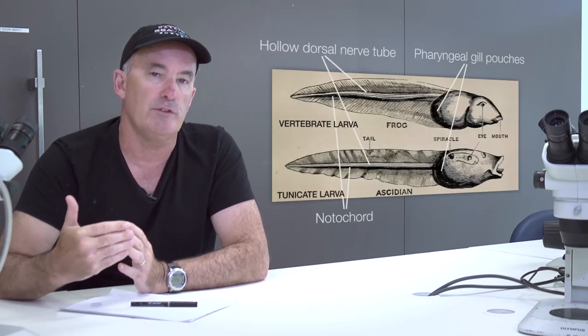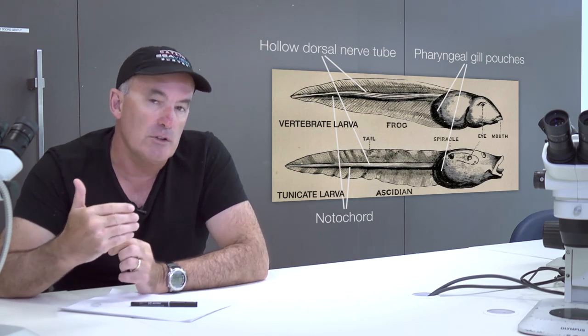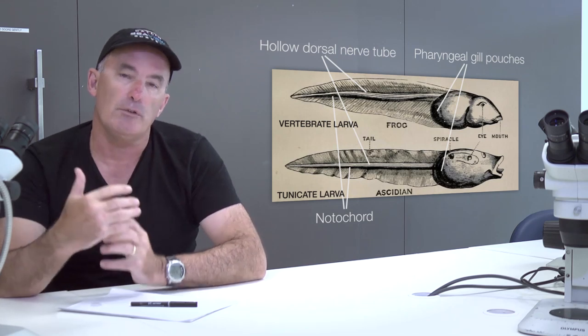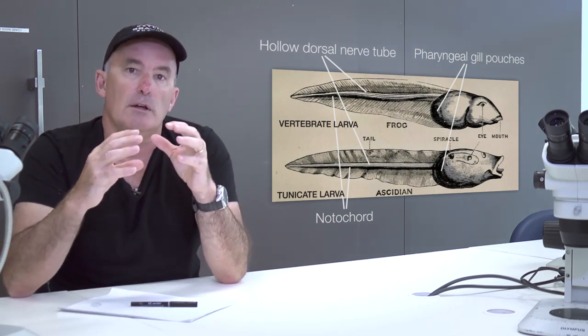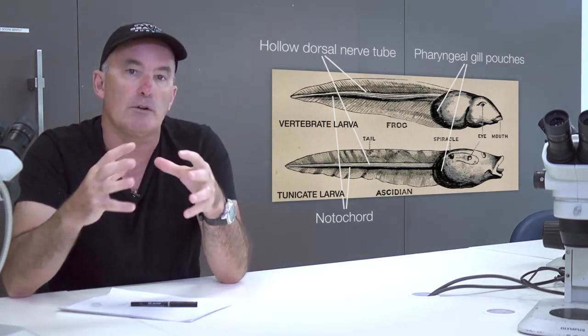They are related to other chordates via structures that are found within their larvae. In this respect they have pharyngeal pouches, a holodorsal nerve tube, and a stiff rod down their back called a notochord. And these features which relate to similar structures in vertebrate groups pull together the chordates.